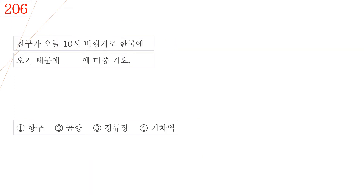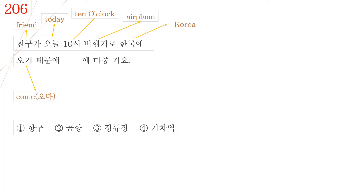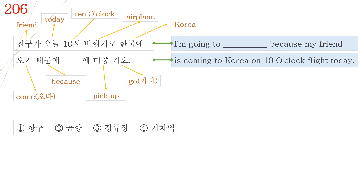Question No. 206. Let's read the dialogue first. 친구가 오늘 10시 비행기로 한국에 오기 때문에 어디에 마중가요? 친구 means friend, 오늘 means today, 10시 means 10 o'clock, 비행기 means airplane, 한국 means Korea, 오기 means come and its basic form is 오다, 때문에 means because, 마중 means pick up, and 가요 means go, its basic form is 가다. So this sentence means I'm going where because my friend is coming to Korea on a 10 o'clock flight today.